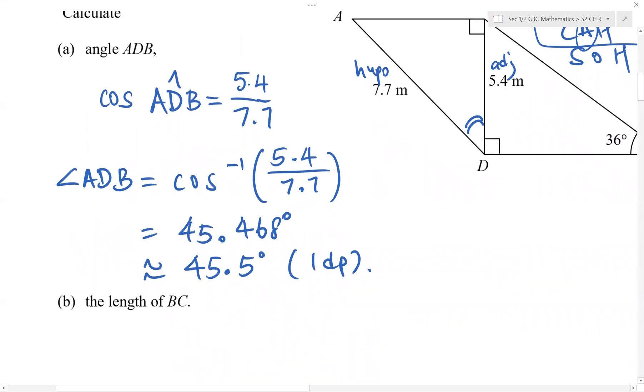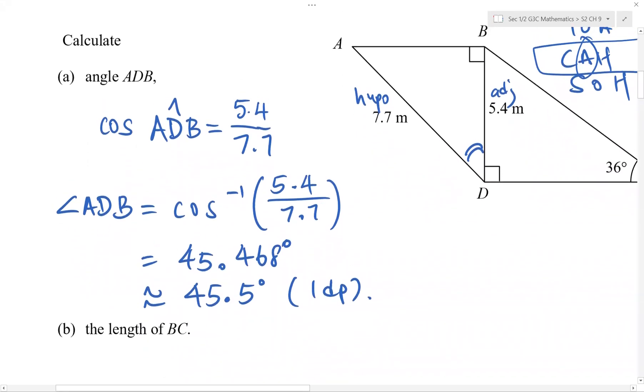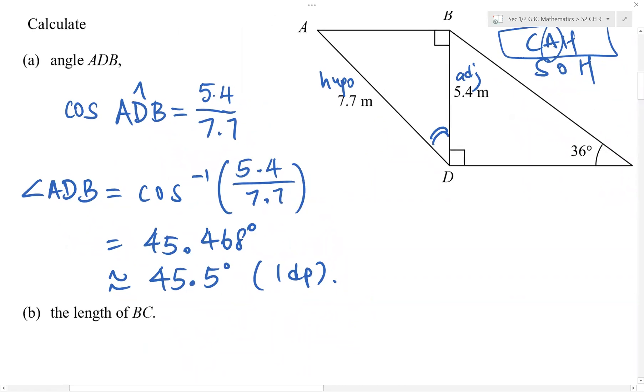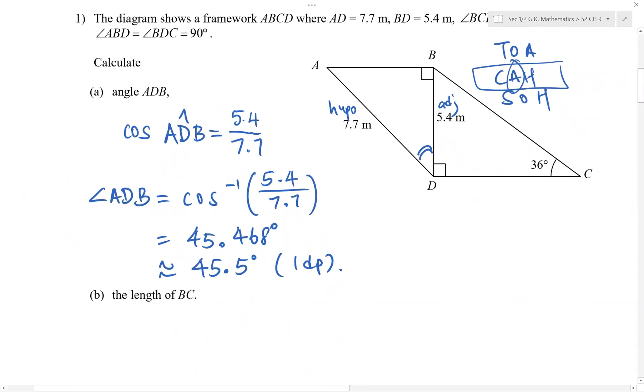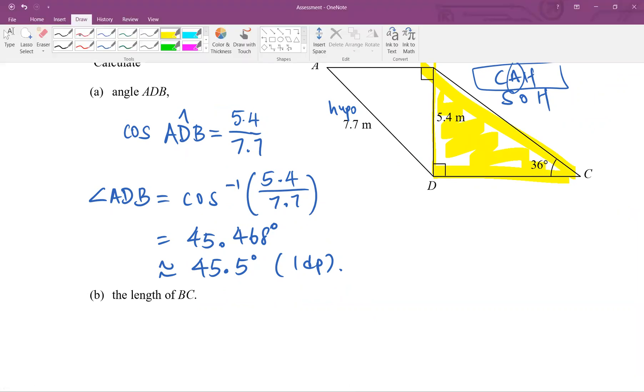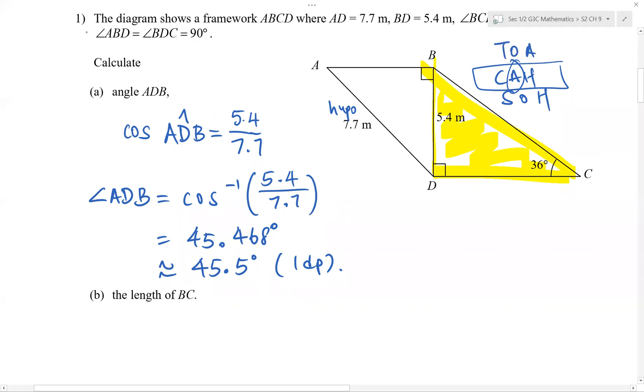Next one. The length of BC. So in our diagram, BC lies in the other right angle triangle. This right angle triangle. BC is our longest side. So regardless of which angle you're talking about, BC is going to be our hypotenuse already.